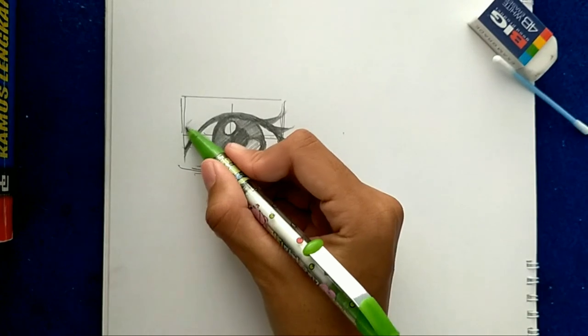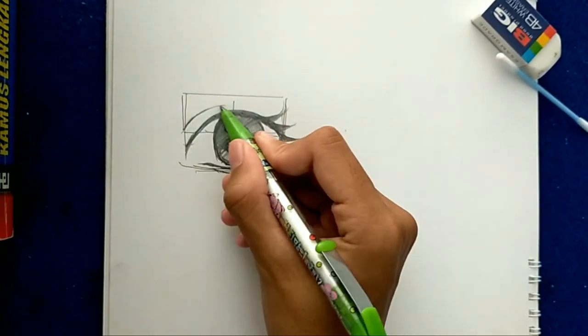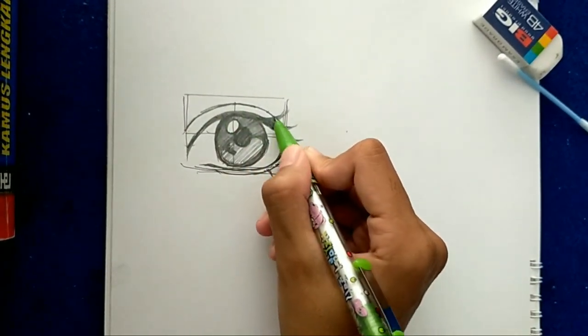Now we will make the eyelid by making a curved line like this with the branch at the base of the eye.